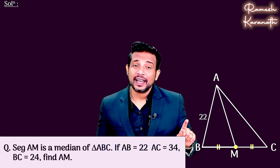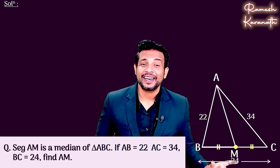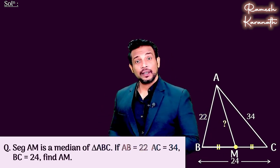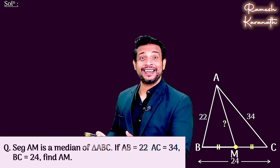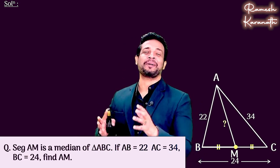Here we have AB equals 22, AC equals 34, BC equals 24. We have to find the median. So we need to find the median, and which theorem apply? Apollonius theorem.